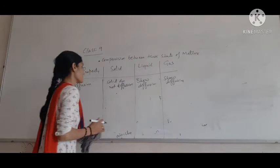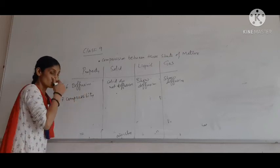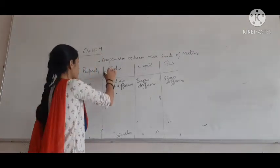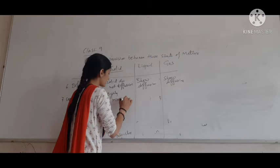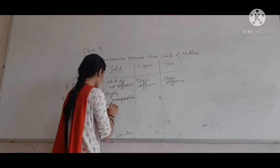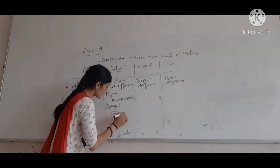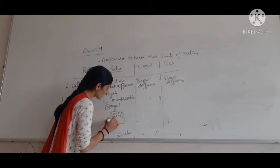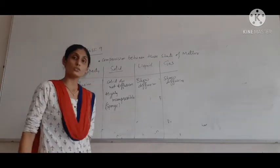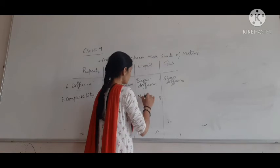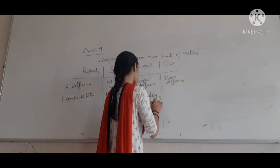Now we have to learn about compressibility. Compressibility is the property in which, when force is applied, there is a change in the position and shape of the particle. Solids are highly incompressible, except sponge — sponge is compressible because it has tiny pores inside that hold air, and when pressure is applied that air comes out. Liquids are moderately compressible, and gases are highly compressible.